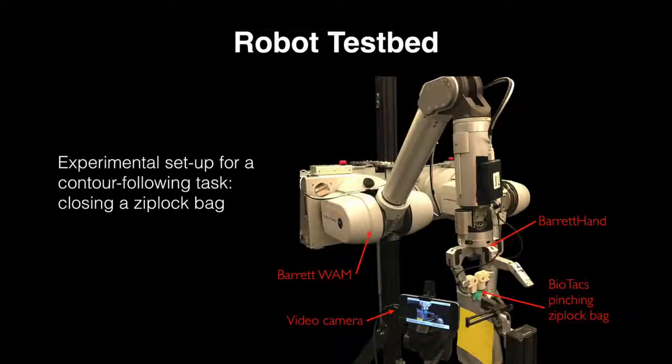The robot testbed consists of a 7-degree-of-freedom robot arm and hand sensorized with multimodal tactile sensors.